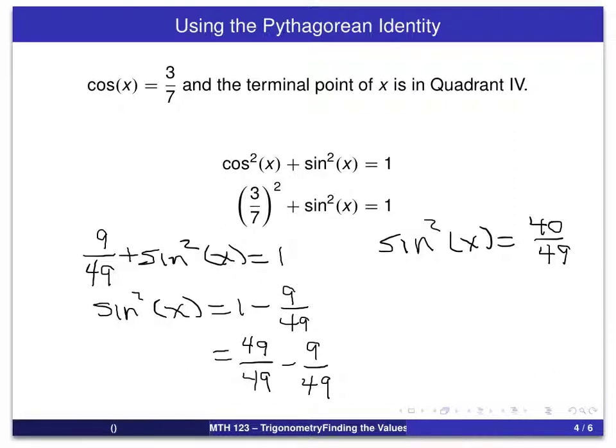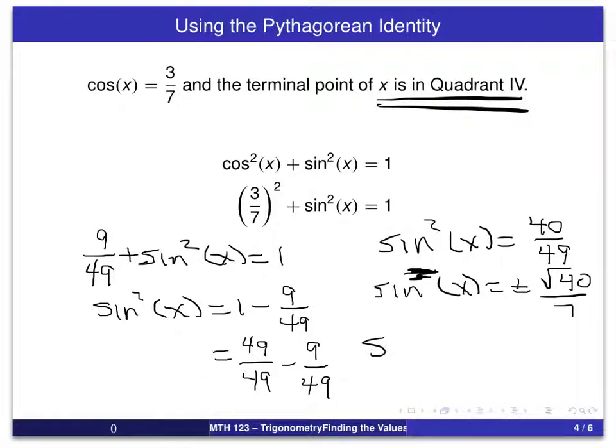So what we get is sine squared of x is equal to 40/49. And now what we of course do is take the square root. If we didn't know anything further about x, basically what we could conclude is that sine of x is equal to plus or minus the square root of 40 over 7. And we put in a 7 and that's the square root of 49. But we do know that x is in quadrant 4. So sine of x is negative. So we now have a specific value for sine of x, namely minus the square root of 40 over 7.